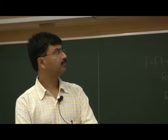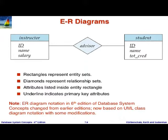In the older notation, the instructor entity had attributes — ID, name, and salary — shown as little ovals attached to the entity. That oval notation is historical but not compact. The new notation is a lot more compact, and when you have more complex things, the ovals are a distraction. UML never had the oval notation. So in the current notation we no longer use the ovals. Relationships continue to be diamonds, and UML also supports the same notation for relationships.